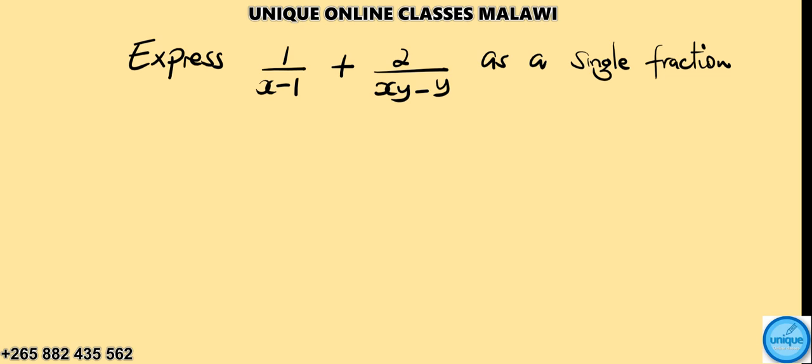Let's see how we're going to answer this problem. We should express 1 over x minus 1, plus 2 over xy minus y, as a single fraction.